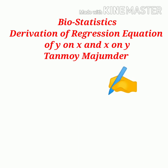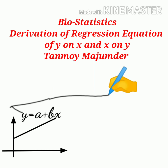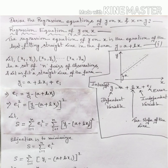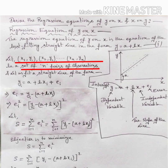Hello students, I am Tanmay Mujumdar. In this video I will show the derivations of the regression equation of y on x and x on y. First I derive the regression equation of y on x. Suppose we have n pairs of observations (x1,y1), (x2,y2), (x3,y3), ..., (xn,yn), and it is required to fit a straight line to this data.